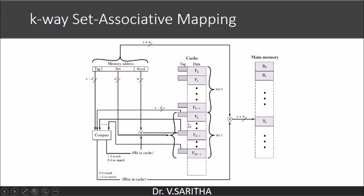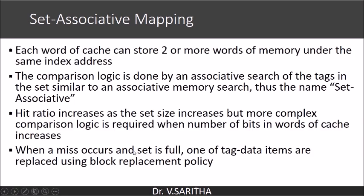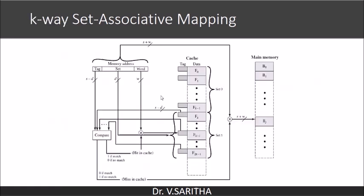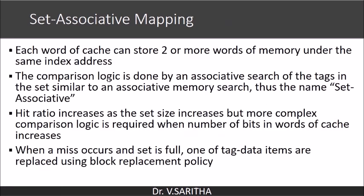K is the number of blocks in a set. Each slot of the cache can store two or more words of memory under the same index address, so the same index can hold more words. The comparison logic performs an associative search of the tags in the set, similar to associative memory search — hence the name set associative. Once the set is identified, it behaves like fully associative mapping.